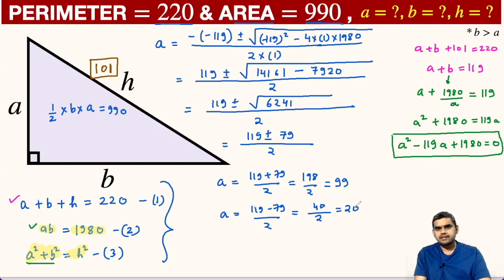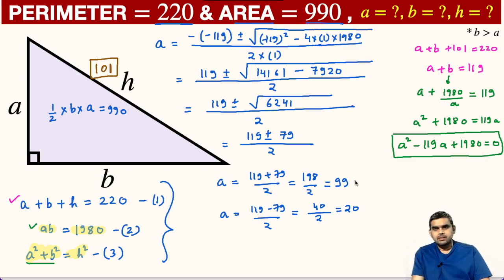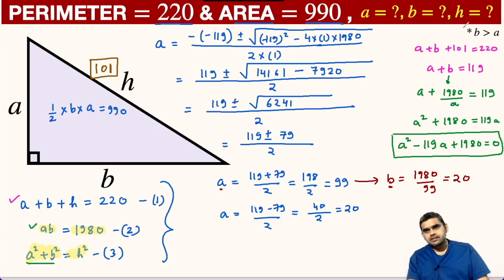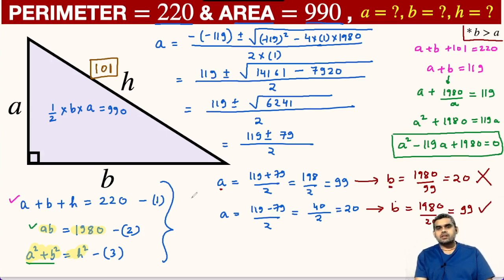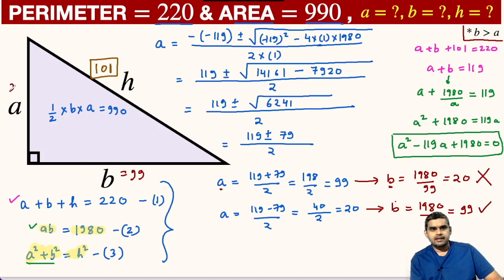So 119 plus 79 equals 198 divided by 2 gives 99 units, or 119 minus 79 equals 40 divided by 2 gives 20. The two possible values for A are either 99 or 20. If A equals 99, then B equals 1980 divided by 99, which is 20. This is not possible because B would be less than A, but the question explicitly states B must be greater than A — so we reject this. Taking A equals 20, B equals 1980 divided by 20, which is 99. Here B is greater than A, so we accept this. Finally, we have found H equals 101, B equals 99, and A equals 20.